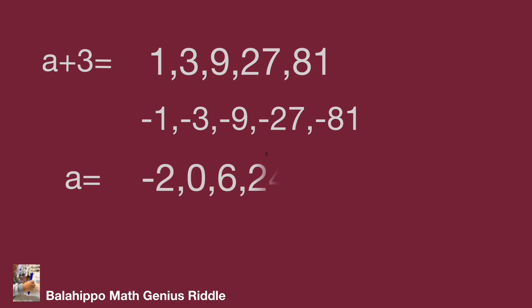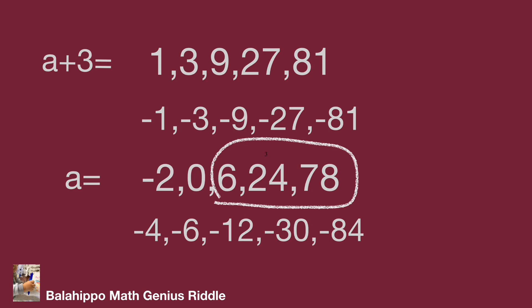Therefore, a equals -2, 0, 6, 24, and 78, or -4, -6, -12, -30, and -84. Since a is a positive integer, only a equals 6, 24, and 78 meet the criteria.